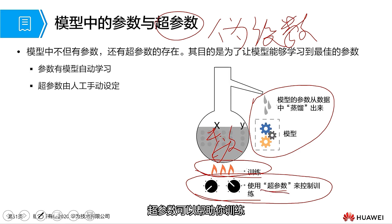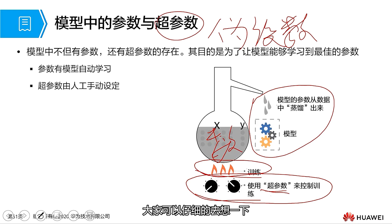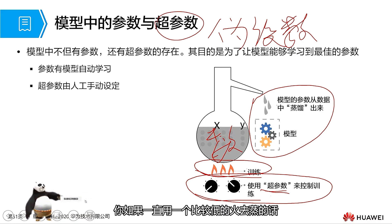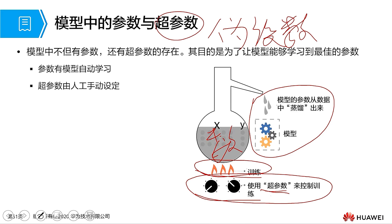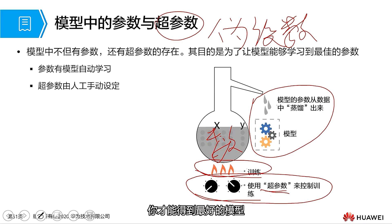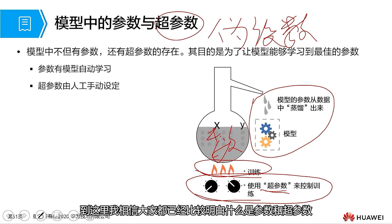If you keep training with a relatively low heat, it may be unable to train well. On the other hand, if too high, you may have produced a lot of impurities. That's how hyperparameters work — you only need to provide the best hyperparameters to get the best model. This is the difference between parameters and hyperparameters. The parameter is learned automatically by the model; hyperparameters need to be manually set by humans.